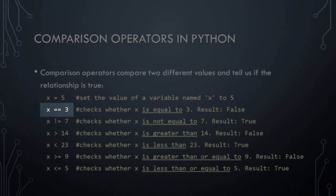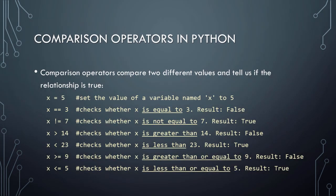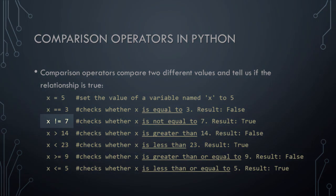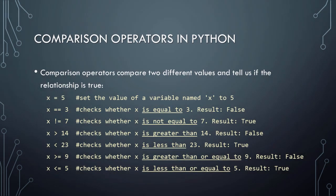Returning to our example, here we're testing whether x is equal to 3. Since we know from the previous line that x is equal to 5, the result of this comparison will be false. Our next comparison operator is an exclamation point followed by an equal sign, and this combination means not equal to. As such, in this example, we are testing whether x is not equal to 7. Since we know that x is equal to 5, the result of this comparison is true.